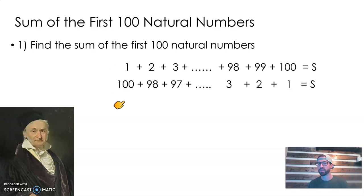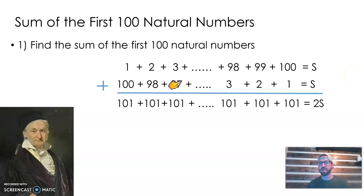1 plus 100 would give us 101, right? 2 plus 98 would also give us 101. 3 plus 97 would give us 101. We end up adding up 101 over and over a whole bunch of times.